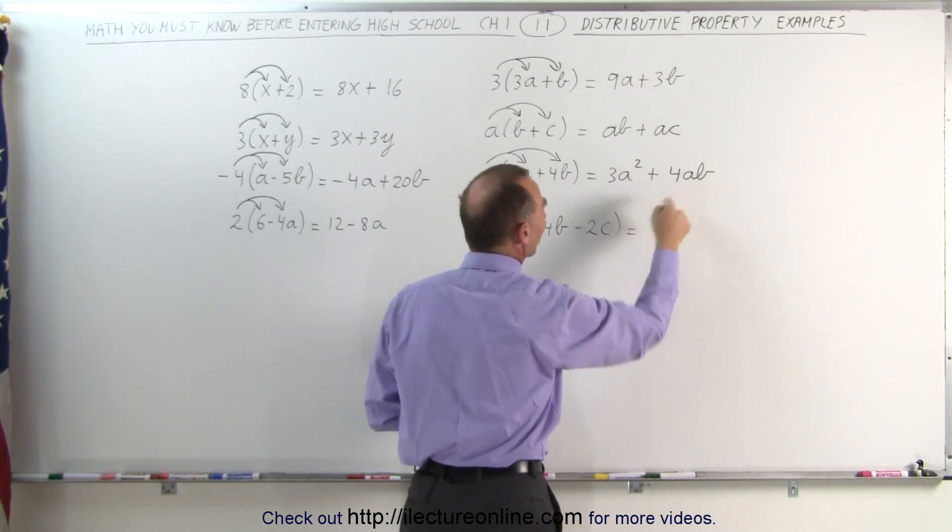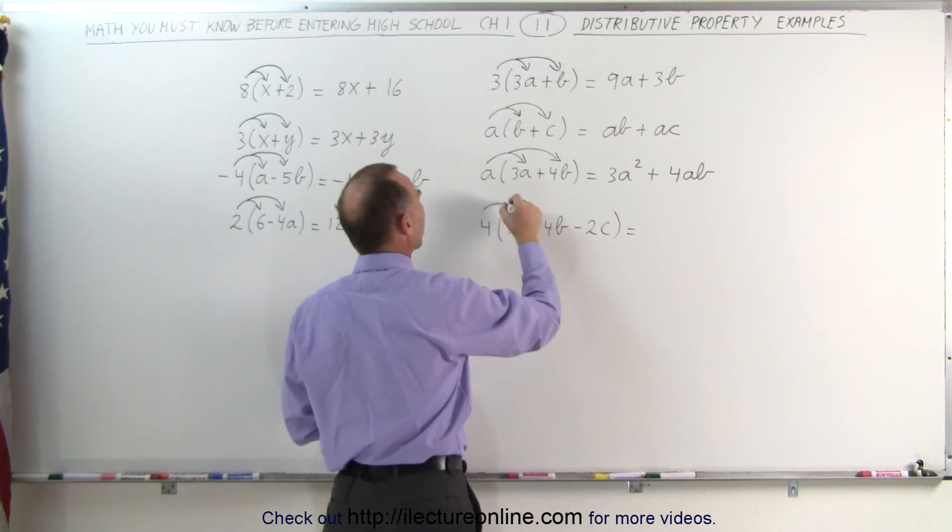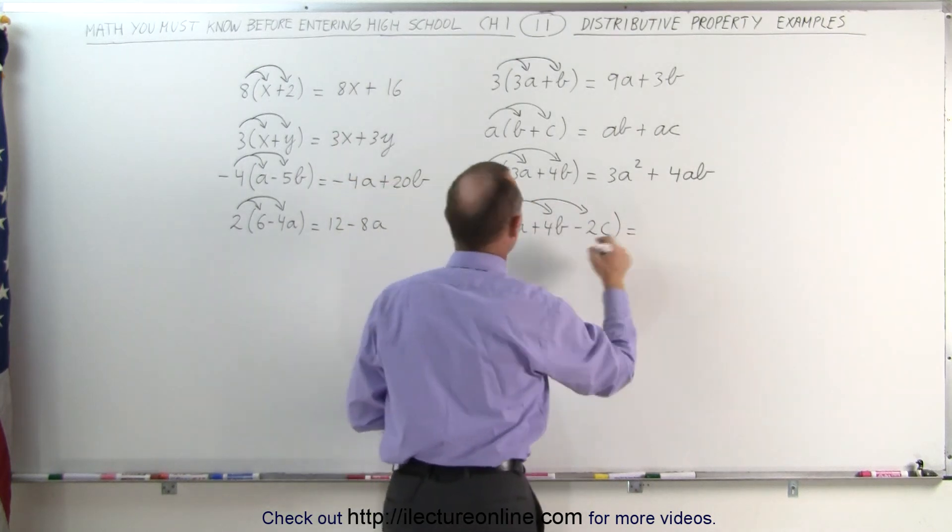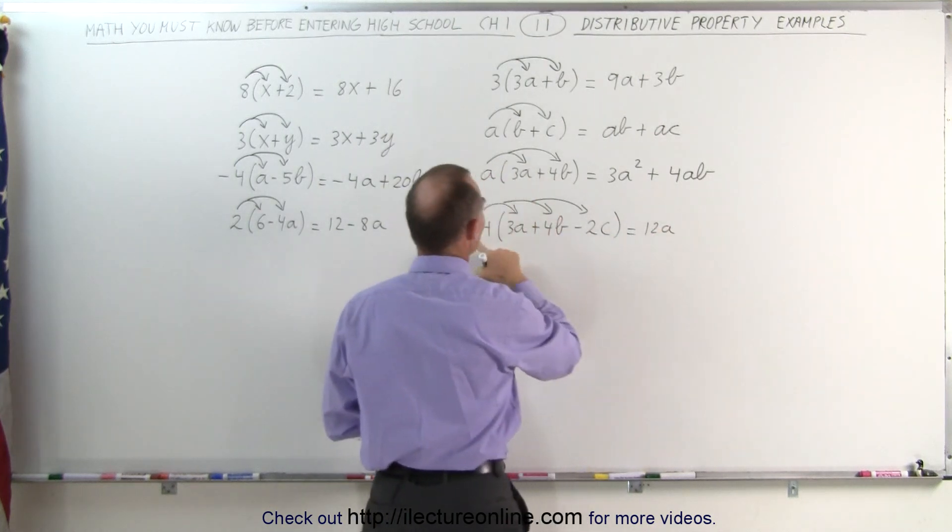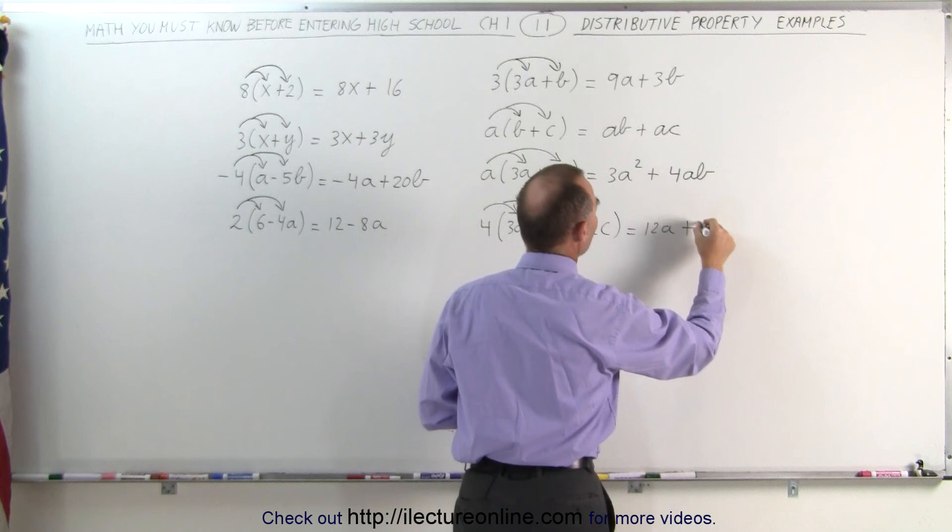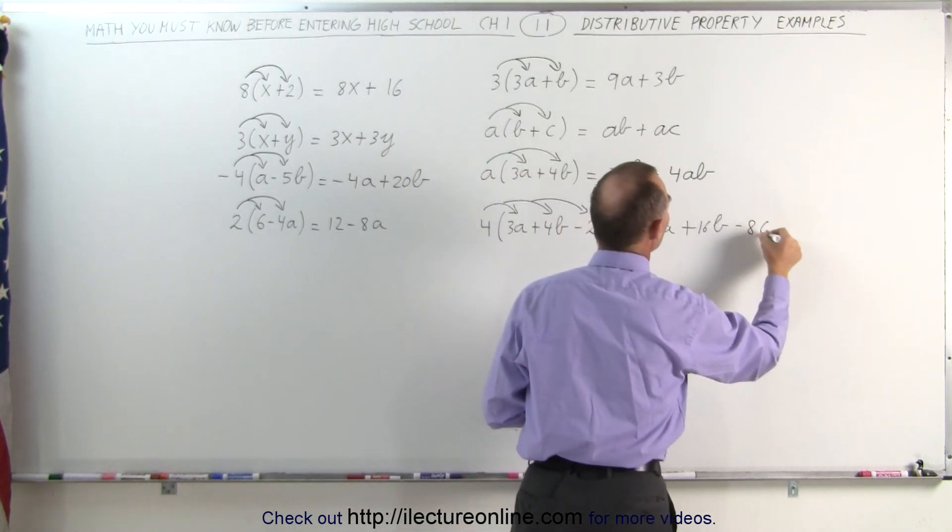So you tend to write the a before the b. Here we're going to distribute the 4 across all three terms in the trinomial. This becomes 4 times 3a, which is 12a, 4 times 4b, which is 16b, and 4 times the negative 2c is the negative 8c.